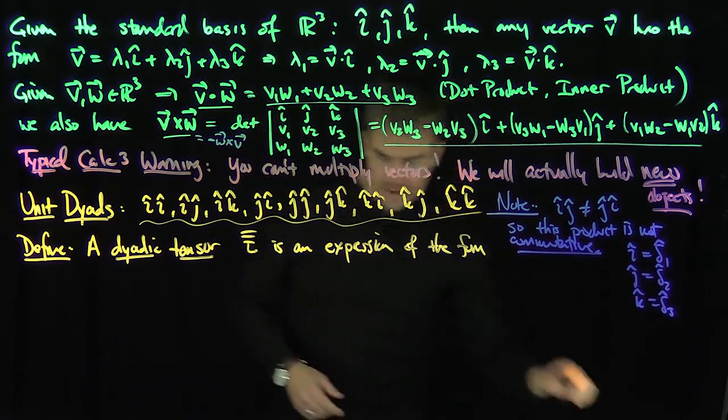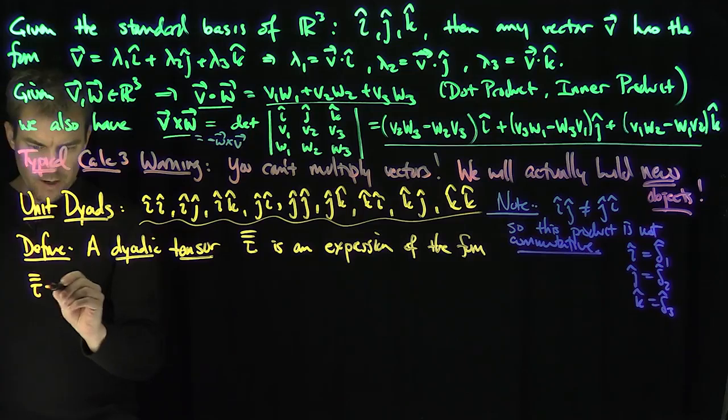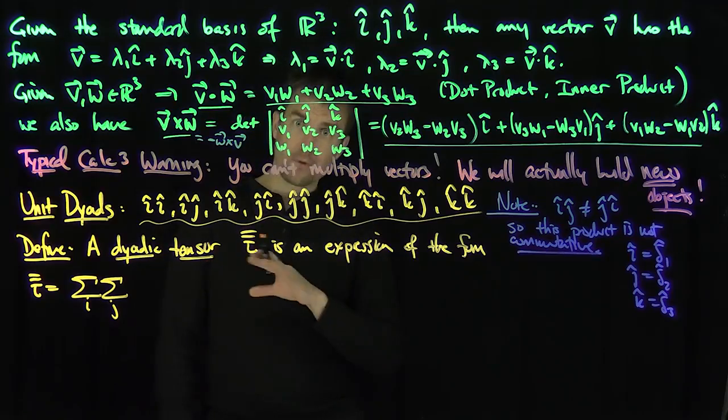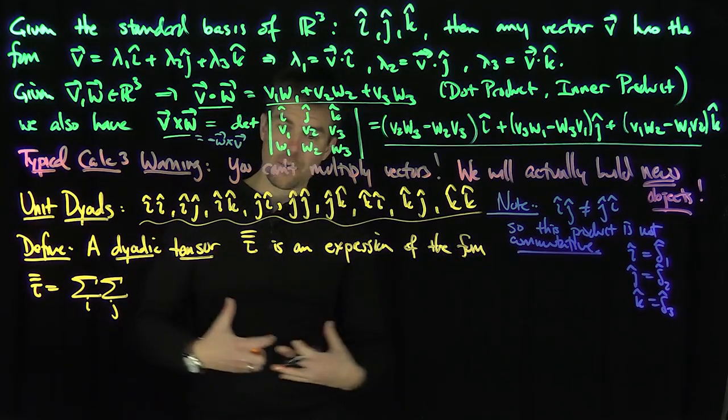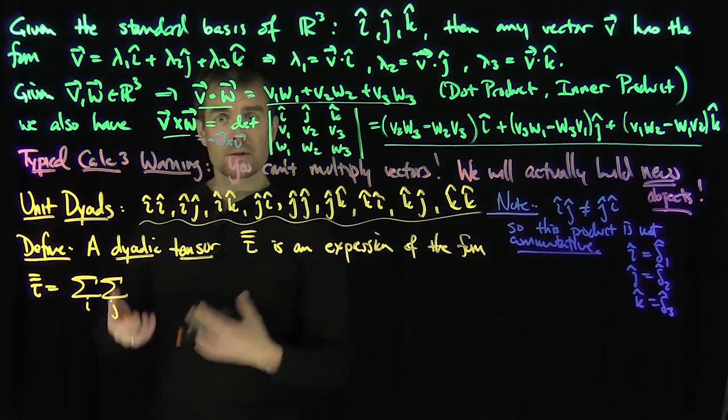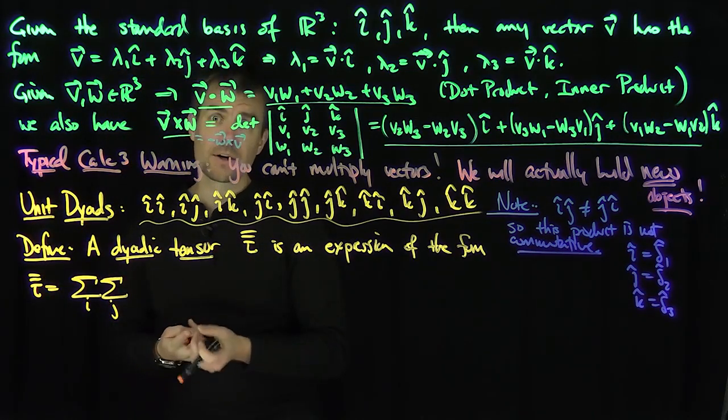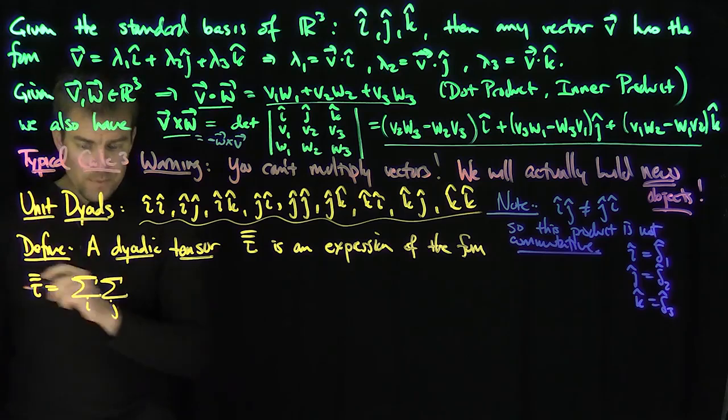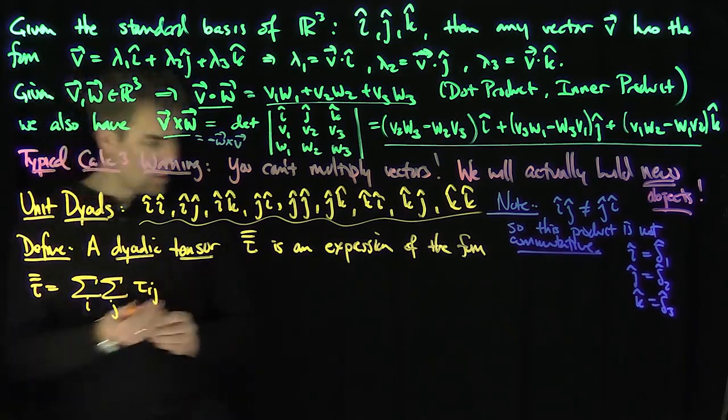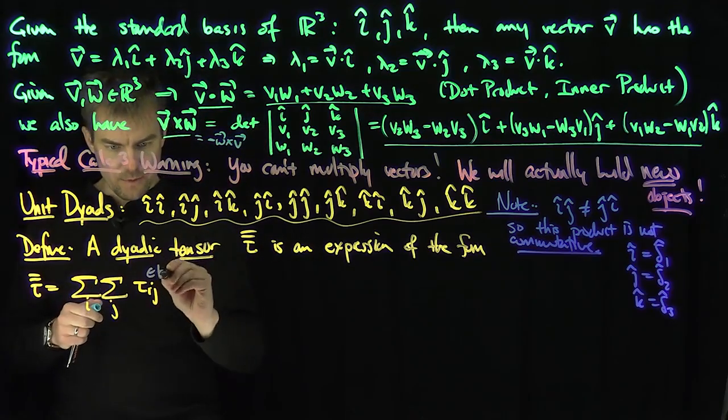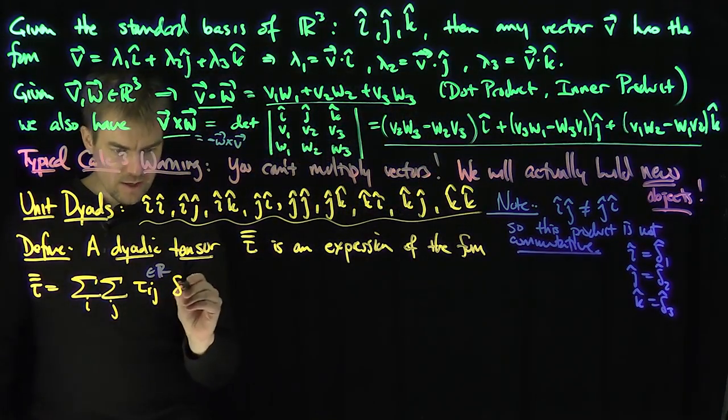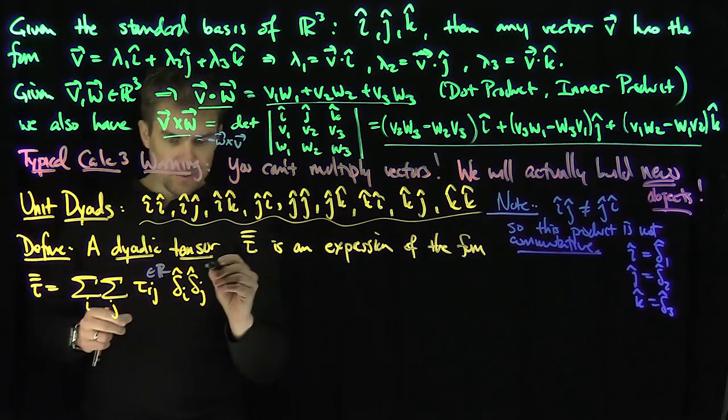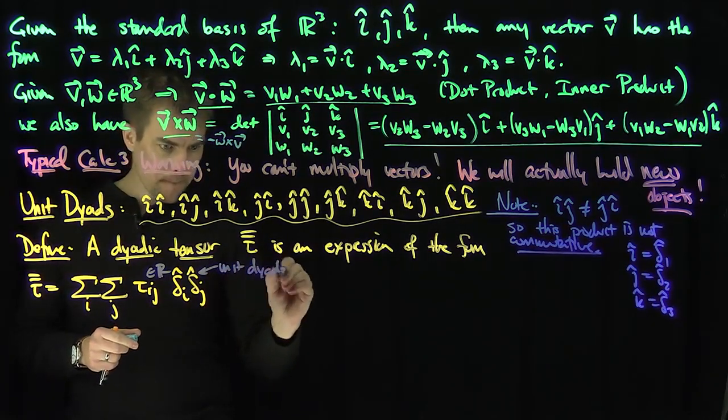So what is a dyadic tensor? A dyadic tensor is simply an expression like this. τ is going to be the sum over i, the sum over j, and we're going to avoid the covariant and contravariant notation for a little while. I want to define this formally, and then later I'll show how these dyadic tensors can be constructed as either a two-covariant tensor, a two-contravariant tensor, or maybe even a mixed tensor. Formally speaking, it's just a sum over i and j of some coefficients τᵢⱼ, those are just real numbers, coefficients, and then times these expressions δᵢ and δⱼ, and these things are just unit dyads.